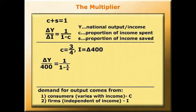So that term, 1 over 1 minus 3 quarters, is equal to 1 over a quarter, which equals 4.